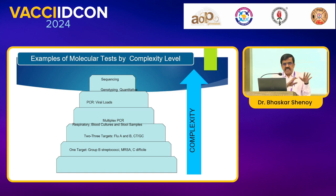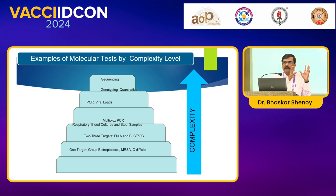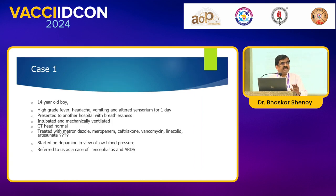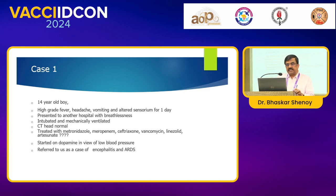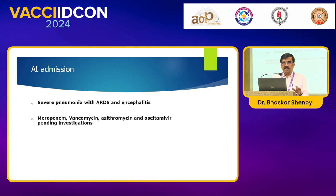PCR in simple words lets you pick the piece of DNA you are interested in and study as much as you want. It is a chemical process wherein you amplify the target nucleic acid and make as many copies as possible — something like a xerox machine. As I told, initially one target; now if you want one specific organism you have a one-target PCR, two-target for flu and other things, and multiplex for common respiratory organisms. Having said that, let us go to some case scenarios. The first case is a 14-year-old boy with high fever, headache, vomiting, altered sensorium who came with breathlessness.